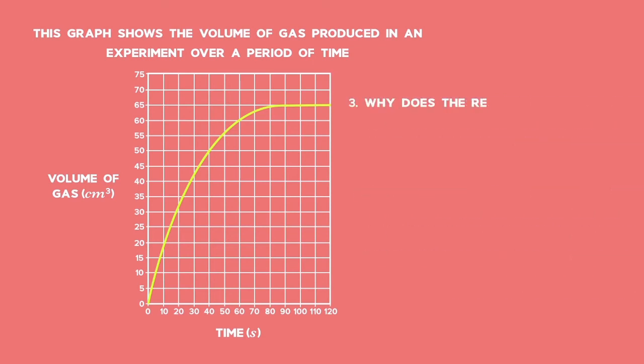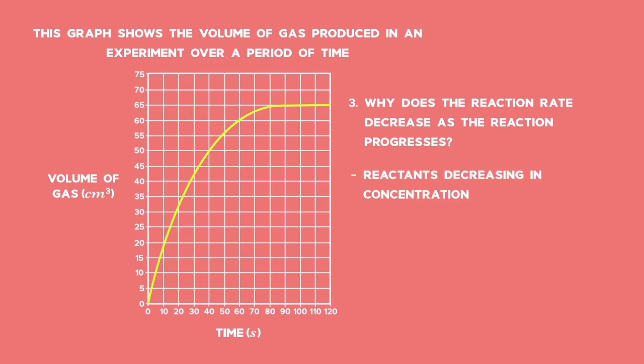Why does the reaction rate decrease as the reaction progresses? Less reactants occur as the concentration of the reactants decrease or they are used up, so fewer collisions occur, thus a slower rate of reaction, which results in the decrease in gradient.